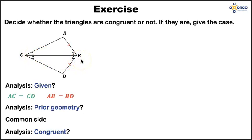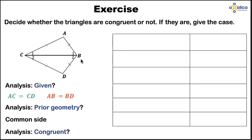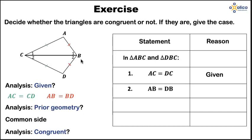So how would we write this up or argue it? How would we prove our points? We have statements and reasons. Under the statements, we say in the two triangles, in triangle ABC and DBC, the first fact we know is that AC and CD are equal, and we know this because it was given to us. The second fact is that AB and DB are equal, and we know this because it was given to us.